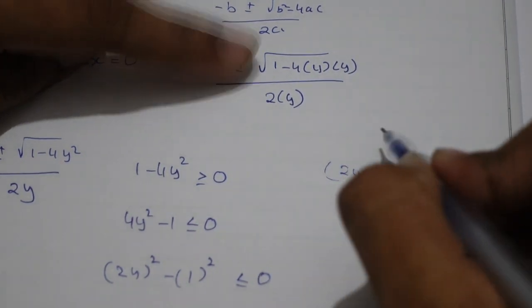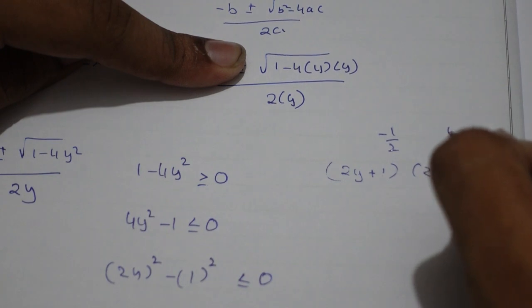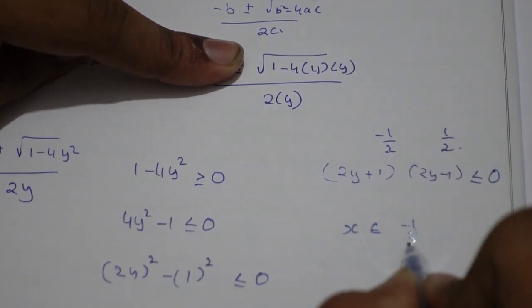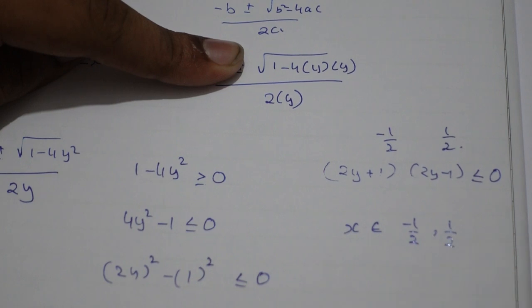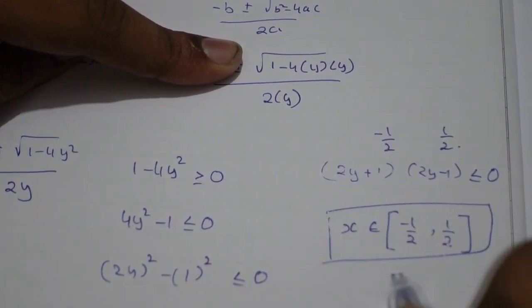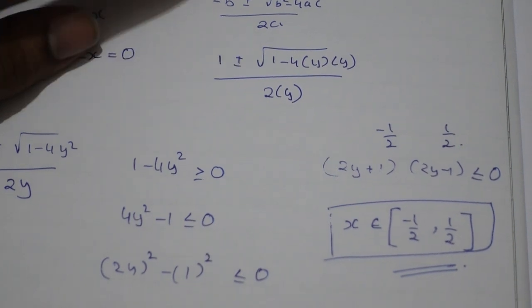So this will be, the root of this is -1/2 and root of this is 1/2. Therefore, x belongs to [-1/2, 1/2]. This will be closed brackets because we have an equality here. And this is the answer. Thank you.